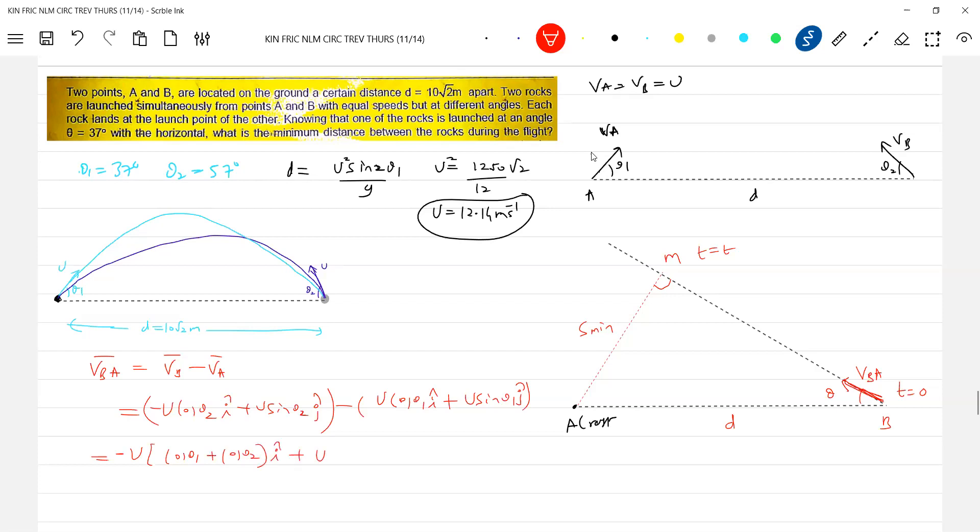U cos theta 2 minus U cos theta 1 i cap. This will be U sin theta 2 minus sin theta 1 j cap.